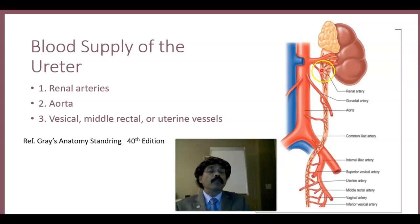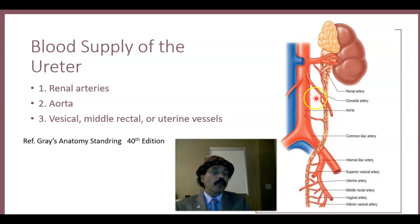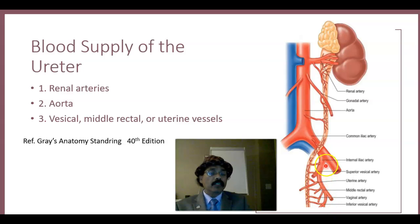So there are many arteries supplying the ureter from nearby vessels — the renal artery, gonadal artery, abdominal aorta (possibly multiple branches), and from the pelvic structures via branches of the internal iliac artery. We know the kidney is formed in the pelvis and ascends to its final position during embryonic and fetal life, which explains why the ureter is such a long structure.